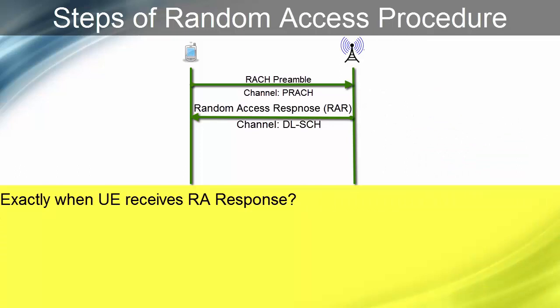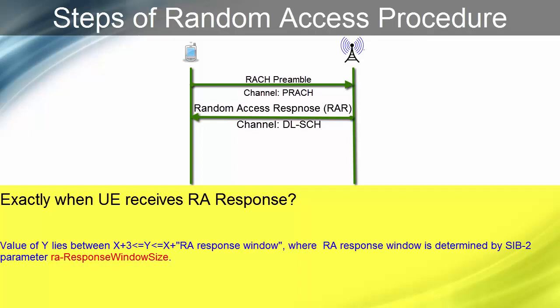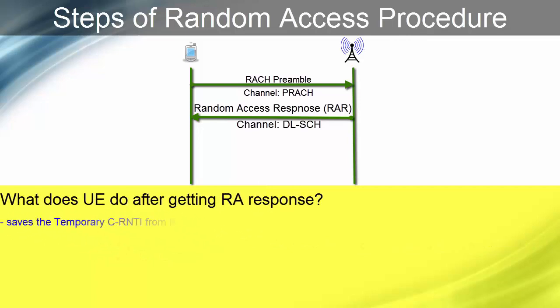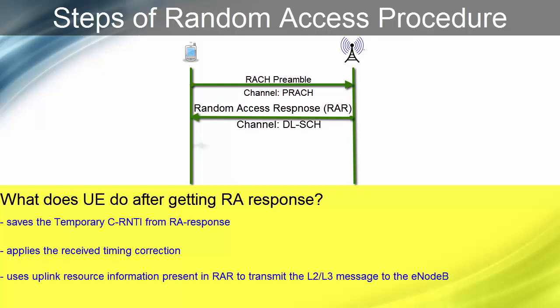If the RACH preamble is sent at time X, UE should expect the RA response to be received within the time gap of duration Y, where the value of Y lies between X plus 3 and X plus RA response window, where RA response window is determined by SIB2 parameter 'RA response window size'. UE saves the temporary C-RNTI from the RA response. UE applies the received timing correction so that UE is synchronized in the uplink direction and can transmit data to the eNodeB. Uplink resource information present in the RAR is used to transmit the data to the eNodeB.